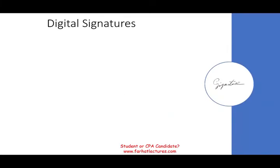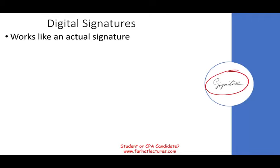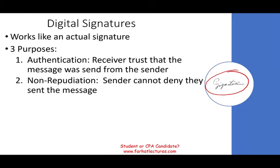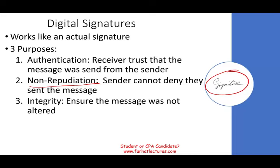A digital signature works similarly to a digital certificate but is less secure, because anyone can forge a physical signature. With a digital certificate, a trusted third party authenticates the information. There are three purposes for a digital signature: it identifies and authenticates — giving the receiver trust that the message was sent from the stated sender; it provides non-repudiation, meaning the sender cannot deny having sent the message; and it ensures the message was not altered in transit.